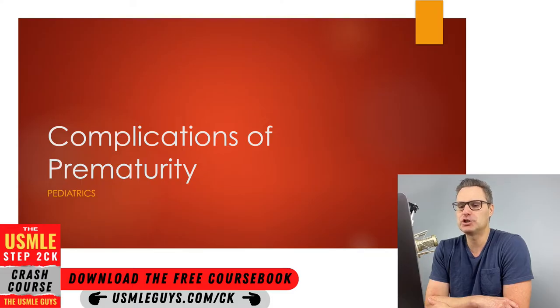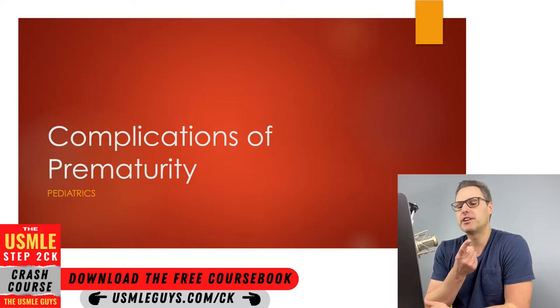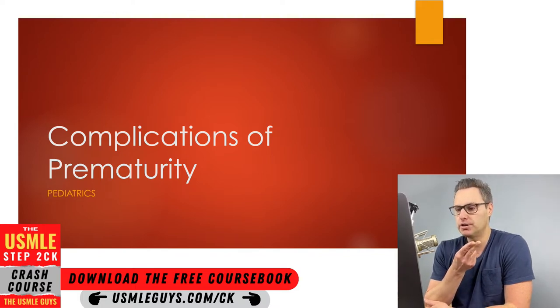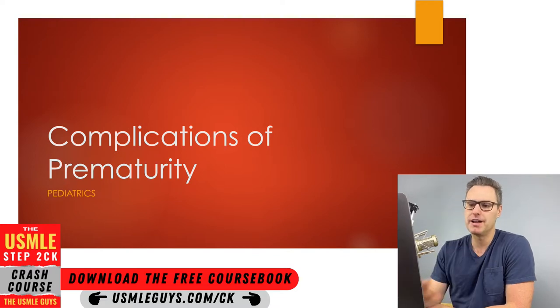Welcome back to the next lecture. In this one, we're going to discuss three common complications of prematurity: bronchopulmonary dysplasia, retinopathy of prematurity, as well as germinal matrix and intraventricular hemorrhage. So let's dive in.